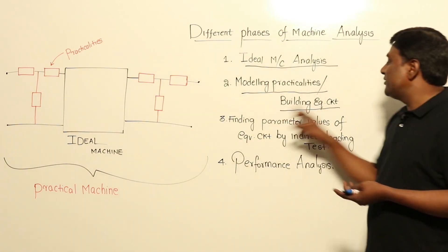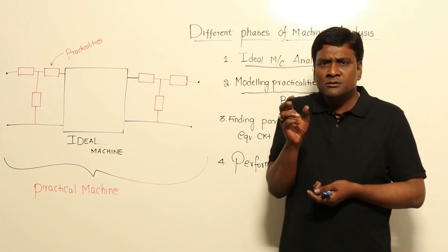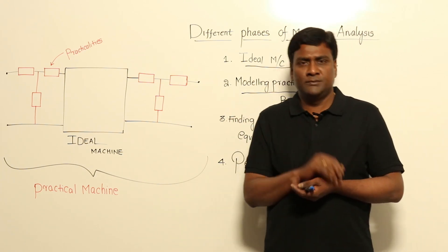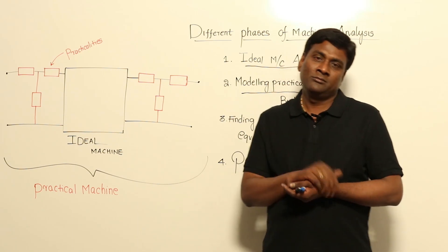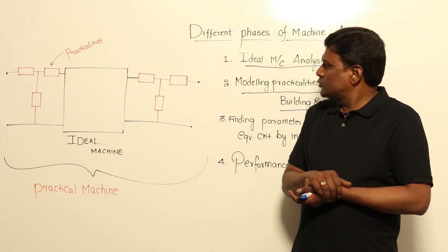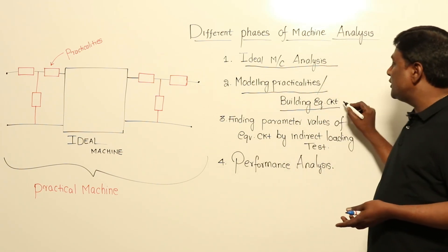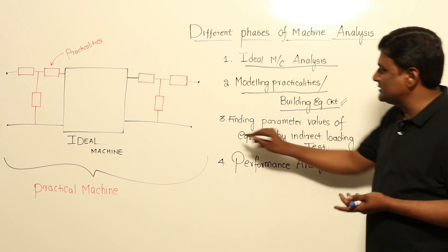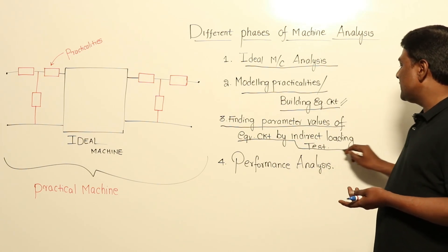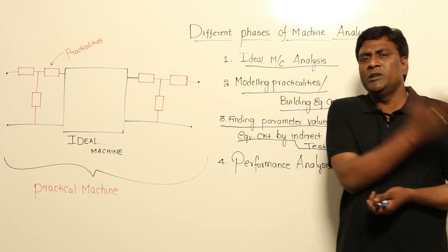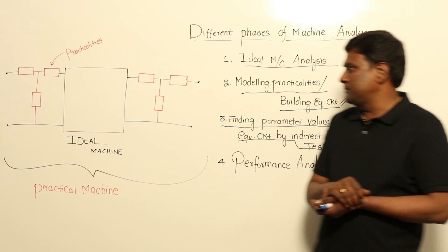Once the practicalities are modeled — finding the equivalent circuit — leakage can be modeled as inductance, copper losses as resistance, and core losses as resistance. Once modeling is over, the third phase is finding the parameter values of the equivalent circuit by indirect loading tests. We decided not to go with direct loading tests, so in an indirect way we have to find the parameter values.